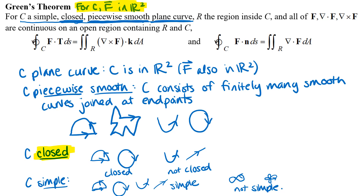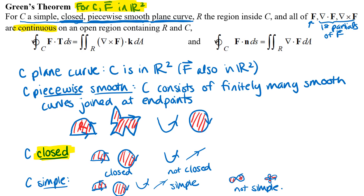Green's Theorem also talks about a region R inside the curve. Because we have a closed curve, we can talk about a region inside it and shade in that enclosed region. The theorem also requires that F, the divergence of F, and the curl of F are all continuous on an open region containing R and C. This basically means F and all of its first partial derivatives need to be continuous — another condition you need to check before using Green's Theorem.